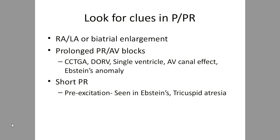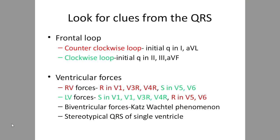QRS complexes provide immense information. First look at the frontal QRS loop: a counterclockwise loop represents a Q-wave in leads I and aVL (like left anterior hemiblock), while a clockwise loop means an initial Q in inferior leads. When analyzing ventricular forces, focus on precordial leads to determine whether it is RV dominant, LV dominant, or both, as in Katz-Wachtel phenomenon. Rarely, the same morphology appears in every precordial lead — stereotypical QRS — seen in single ventricle, due to absence of the interventricular septum with no transition.